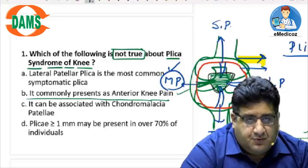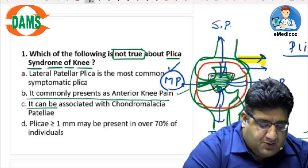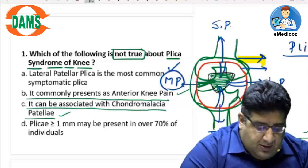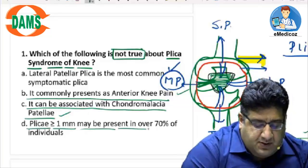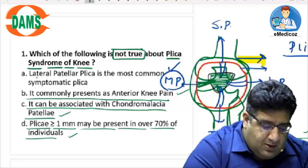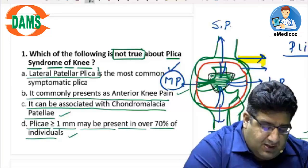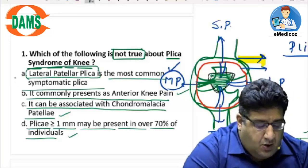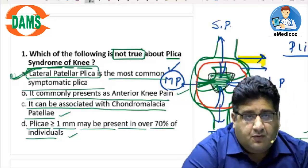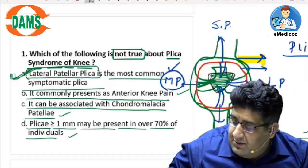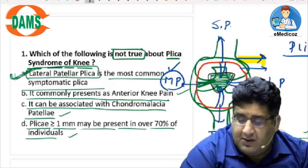Now reviewing the options: it commonly presents as anterior knee pain — true. It can be associated with chondromalacia patella — true. Plica may be present in over 70% of the population — true. Lateral patellar plica is the most common symptomatic plica — this is NOT true. The most common symptomatic plica is the medial plica.